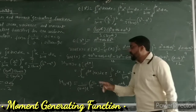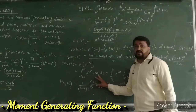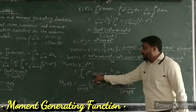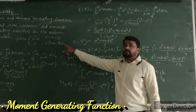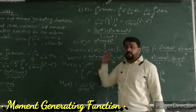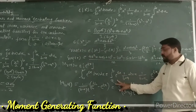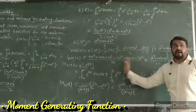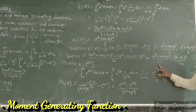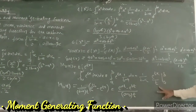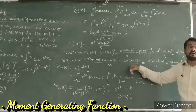Now we find the moment generating function. By definition, it is the integration of e^(tx)·f(x) dx. Here f(x) is 1/(b-a), and the integration is from a to b. Integrating e^(tx) with respect to x, where t is a constant, gives e^(tx)/t.